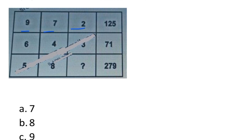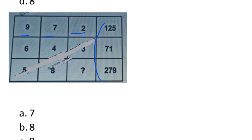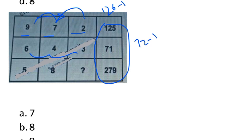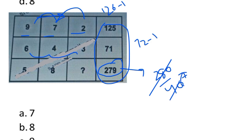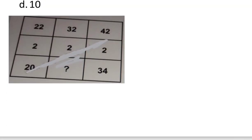This next question is also frequently mentioned — a well-known question. You can see the values 9, 7, and 2. Directly: 9×7 = 63, 63×2 = 126, 126 minus 1 = 125. Then 6×4 = 24, 24×3 = 72, 72 minus 1 = 71. For 8×5 = 40, since we subtract 1, we add 1 to get 281 — but dividing: 8×5 = 40, the answer is 7. Option A is 7.